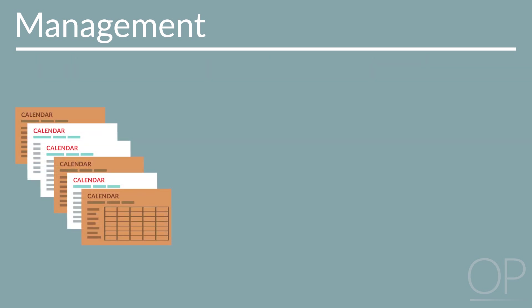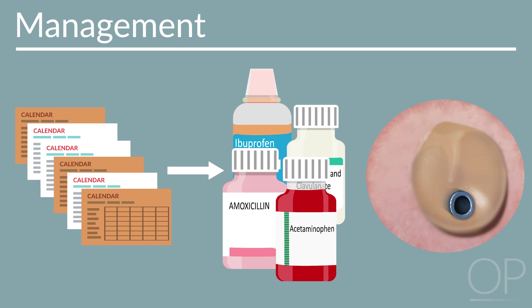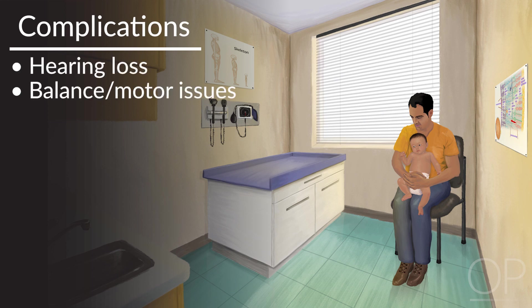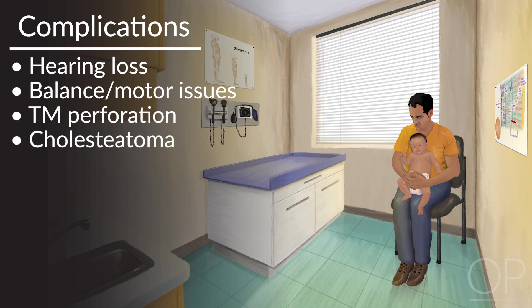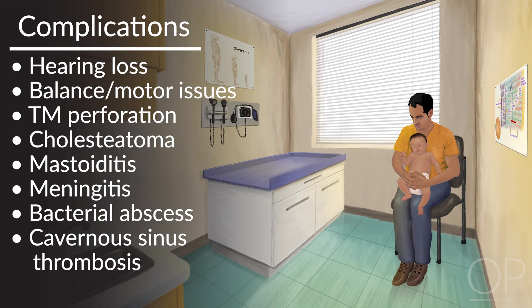Patients with recurrent acute otitis media, in addition to receiving appropriate antibiotic therapy, can be referred to an ear, nose, and throat specialist for consideration of tympanostomy tubes in order to decrease the risk of hearing loss and speech delay. Complications of acute otitis media include hearing loss, balance and motor issues, tympanic membrane perforation, cholesteatoma, mastoiditis, meningitis, bacterial abscess, and cavernous sinus thrombosis.